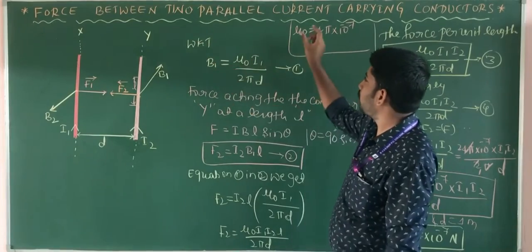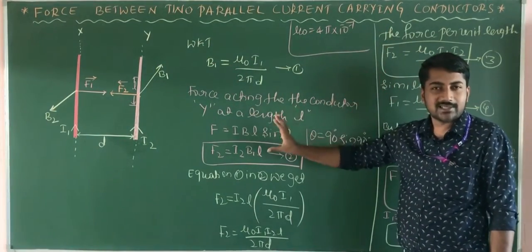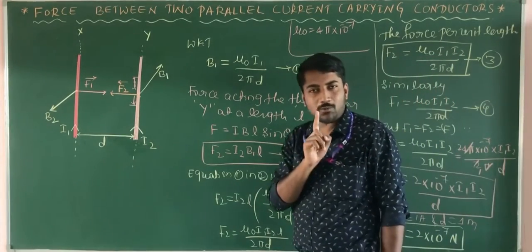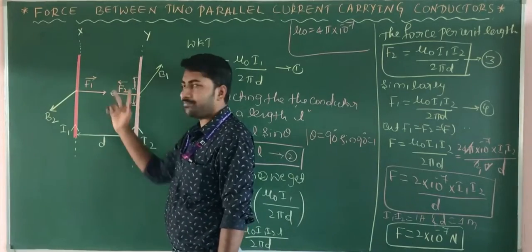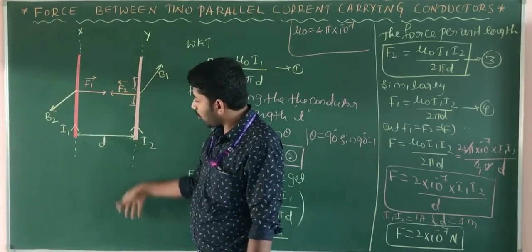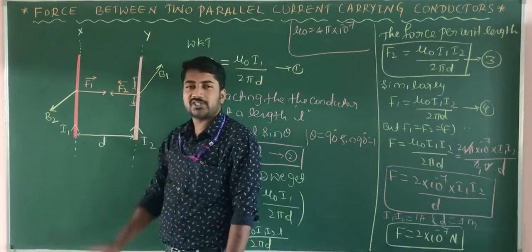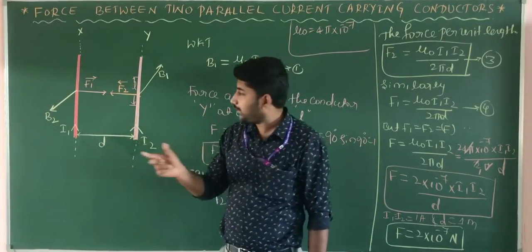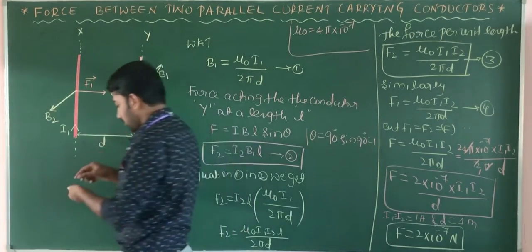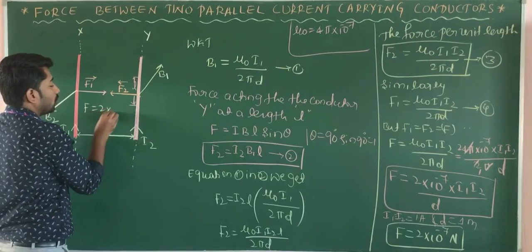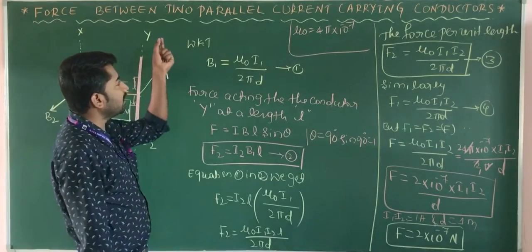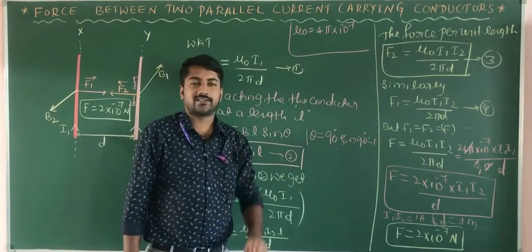This is about the force between two parallel current-carrying conductors — a very simple derivation. Remember: when current moves in the same direction, the two conductors are attracted towards each other. When current moves in opposite directions, the two conductors repel each other. With a length of 1 meter and distance D = 1 meter, the force is F = 2 × 10⁻⁷ newton. Thank you.